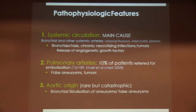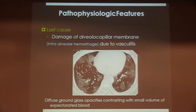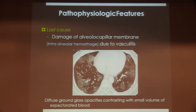Very, very rarely — but you need to be aware of this possibility — the bleeding comes from the aorta, and it is usually catastrophic. Lastly, intra-alveolar haemorrhage is more of a differential for haemoptysis and is seen in patients with vasculitis. You may suspect this diagnosis when there is a contrast between the very extensive ground glass and the small amount of expectorated blood.